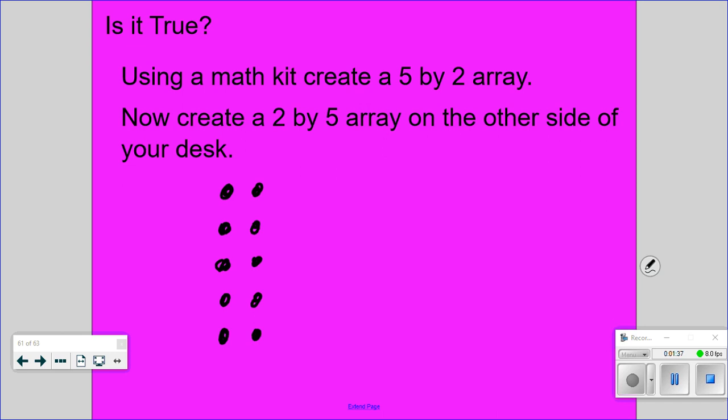When you made your 2x5 array, Michael, how was it different? There was 2 going up and down and then 5 going on the sides. Yeah, so many of you have 2 arrays that look like this. You have 1 set of arrays going up and down, you have 1 set of arrays going side by side.